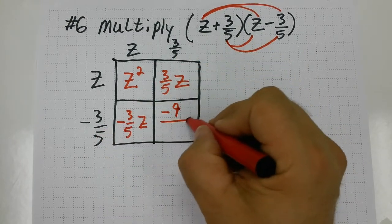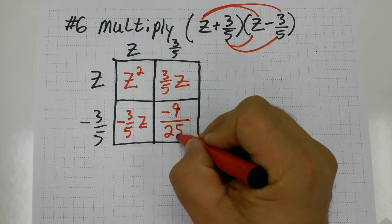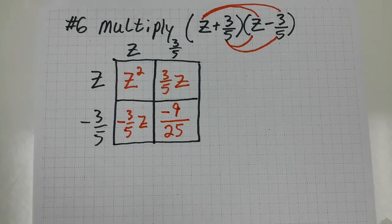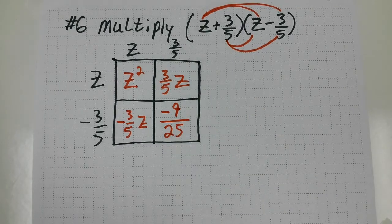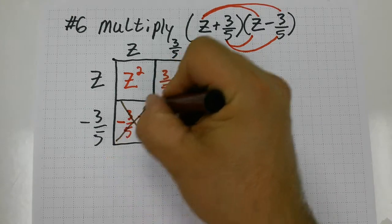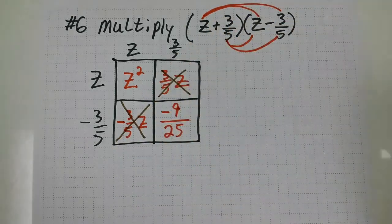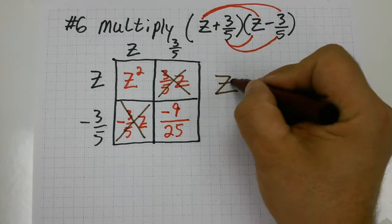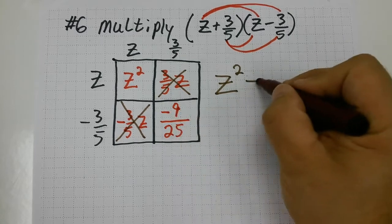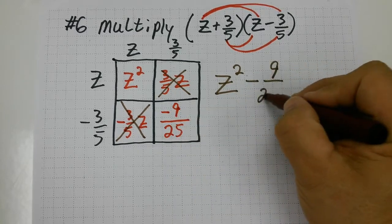And then 5 times 5. That's going to give me 25. So once I combine like terms inside this Punnett, these are going to cancel. It's going to give me a final answer. Z squared minus 9 twentyfifths.